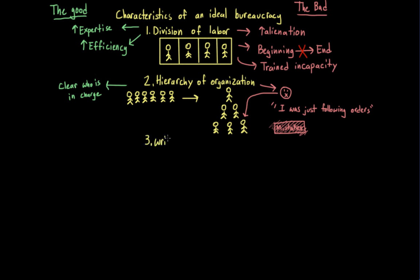The third characteristic of bureaucracies is the existence of written rules and regulations. And as you might expect, rules and regulations do a lot of good for an organization. They let workers know what is expected of them. They help to ensure uniform performance by all members or workers.